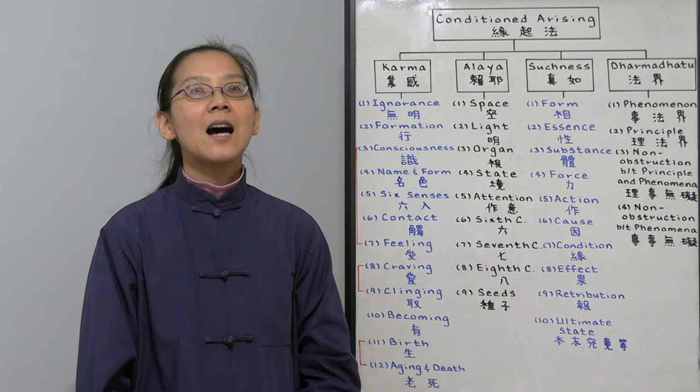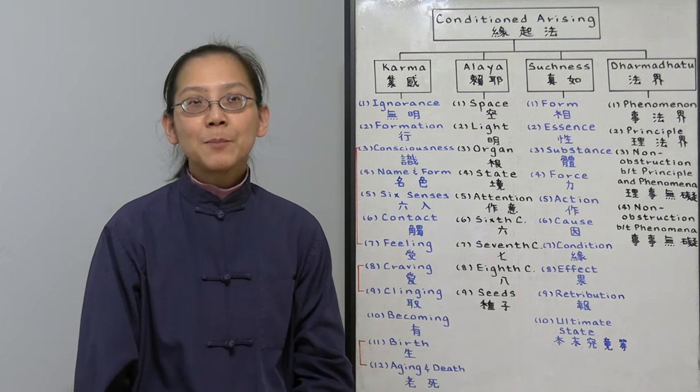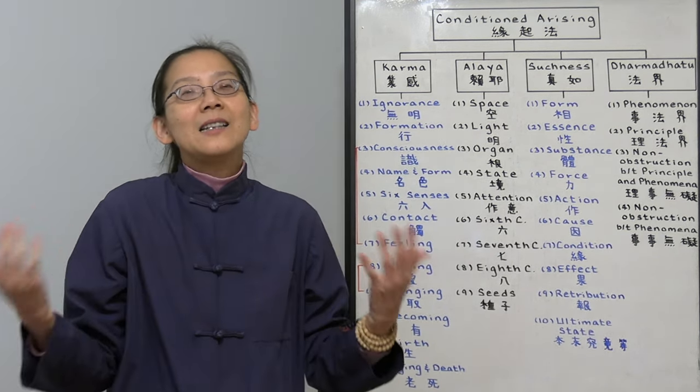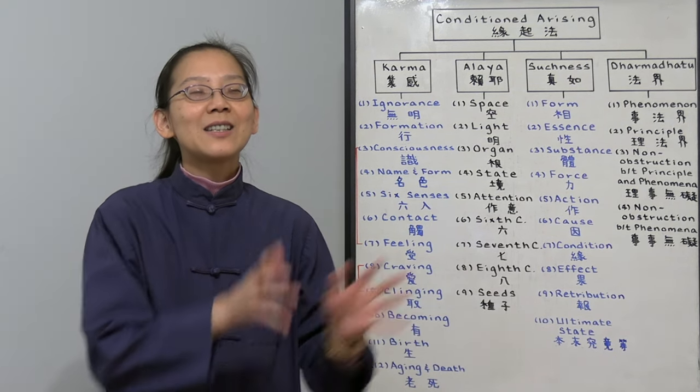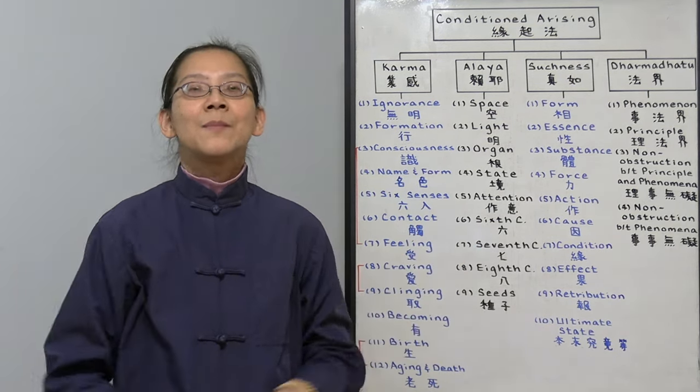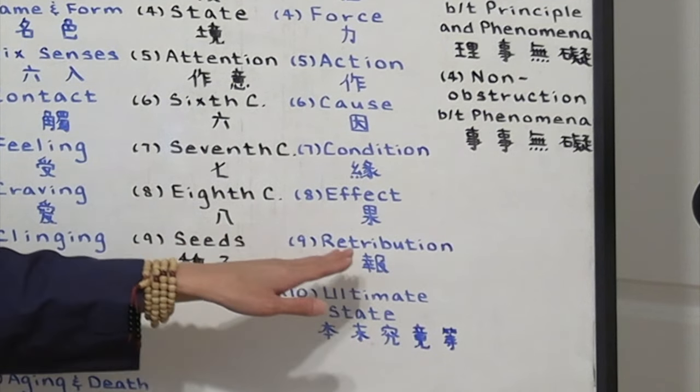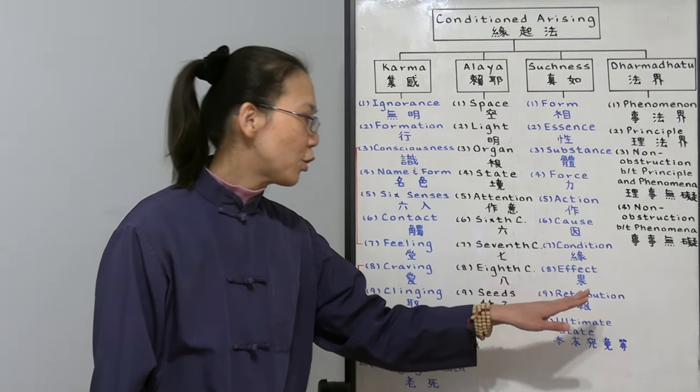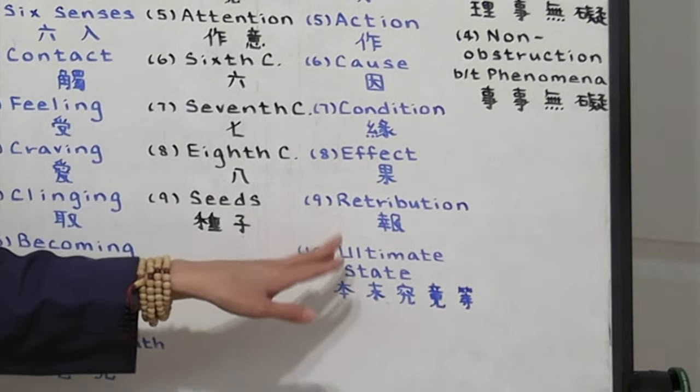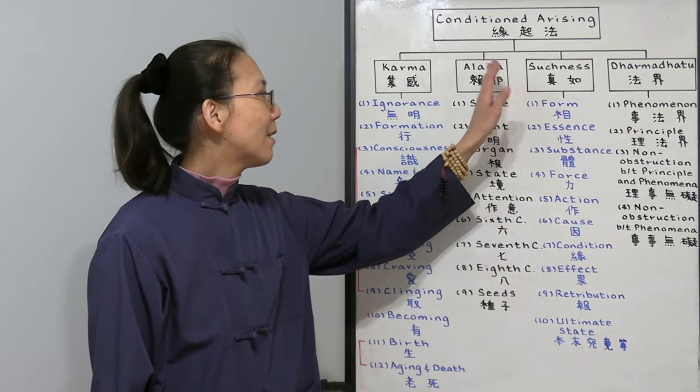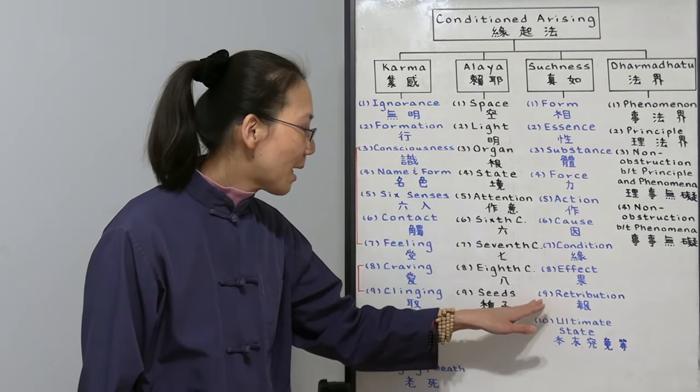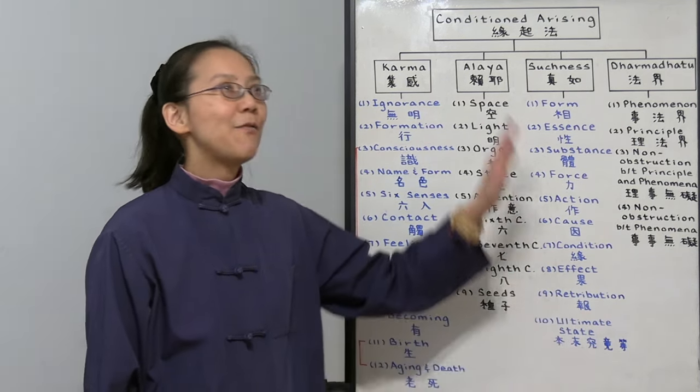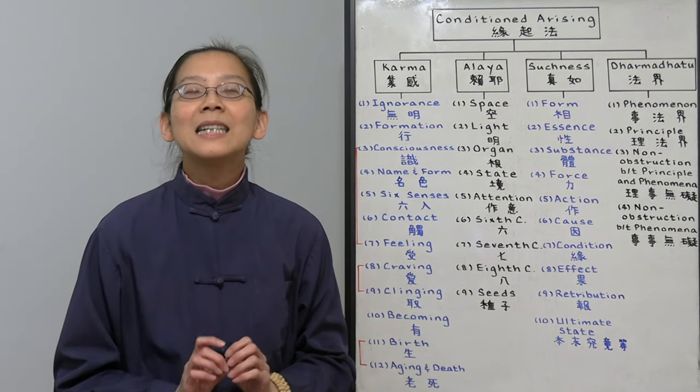Then we will have effect. Our habitual effect. People from their prior lifetime, they were a Bodhisattva. This lifetime, they naturally do good deeds. They like to share, they give hugs, they love others. Then we have our actual retribution. Which realm you take birth in, that's your retribution. Then we have the ultimate state. From number one, the form, all the way to number nine, the retribution. That is called the ultimate state.